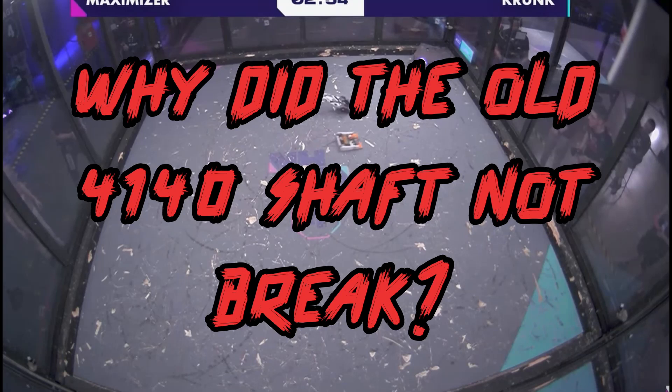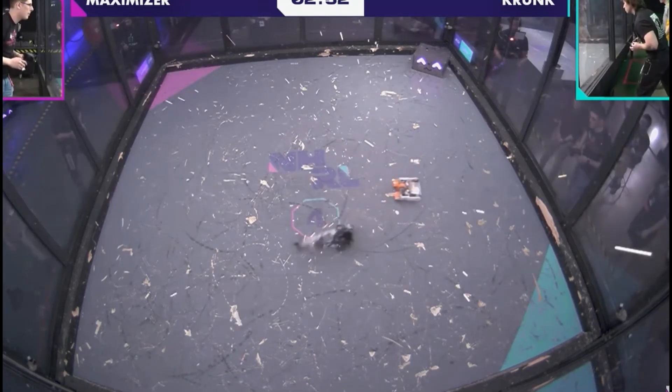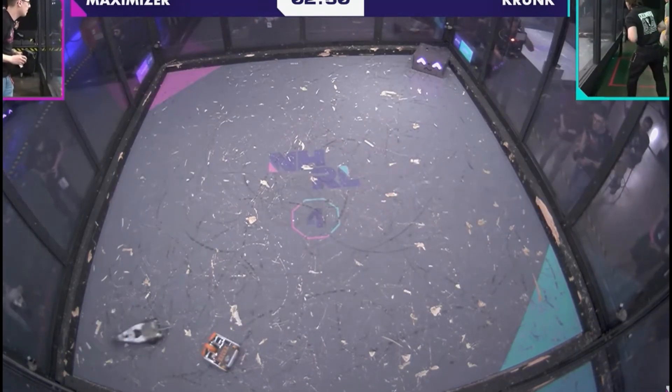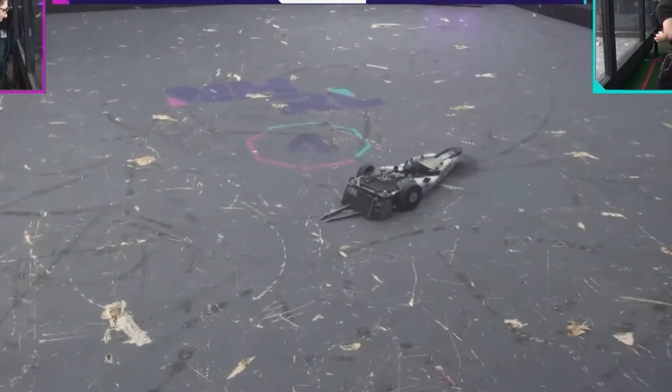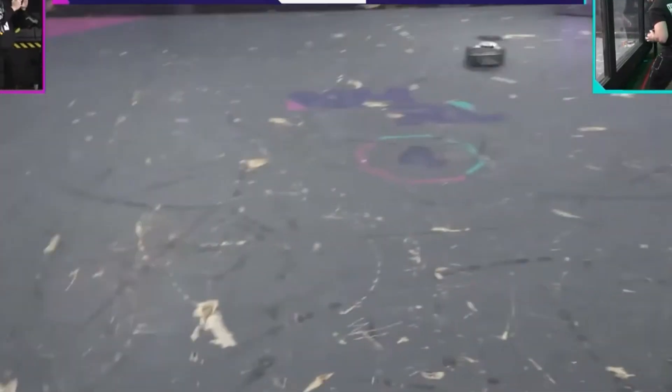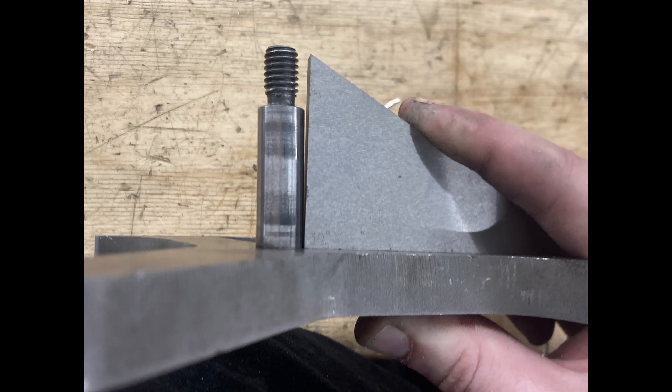So before we continue the engineering process on this, we got to ask ourselves why the old 4140 shaft didn't break. I mean, these shots from Krunk are just as hard as the ones against Amphisbaena. But at that time, I was on a half-inch shaft, which is significantly smaller. I think there's two things going on here.